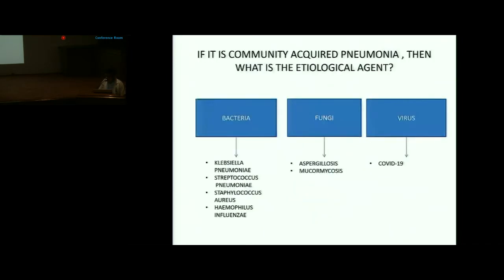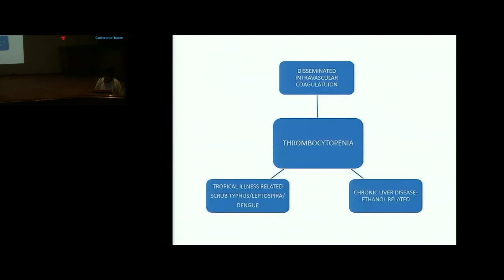If community-acquired pneumonia was the diagnosis, the likely etiological agents given poorly compliant diabetes and alcohol abuse would be bacteria, with fungus also possible. COVID-19 was ruled out as COVID was negative. Thrombocytopenia was most likely due to disseminated intravascular coagulation given coagulopathy, though tropical illness-related thrombocytopenia (scrub typhus, malaria) could not be ruled out.